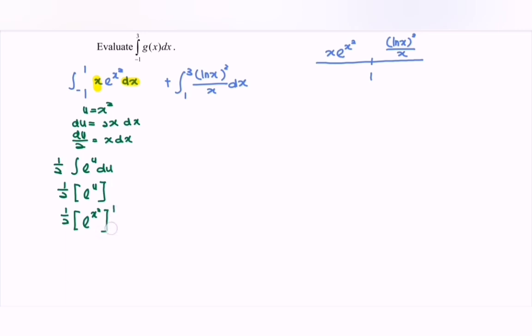Substitute the values, we have 1 and negative 1. So 1 over 2 bracket, if we substitute 1, we will have e to the 1. Minus, if we substitute the negative 1, because of the x squared, we still have e to the 1. So we will have 0 on the left hand side.